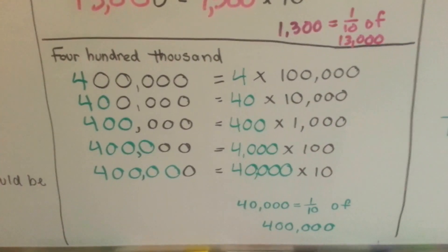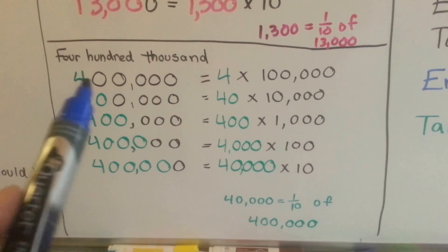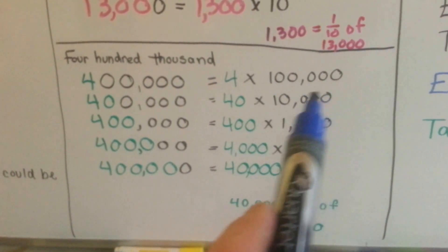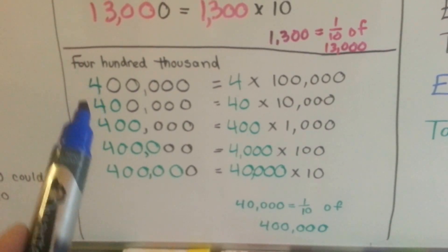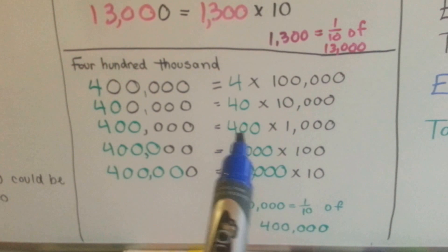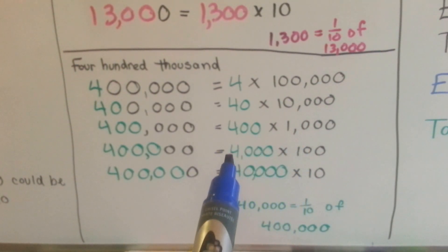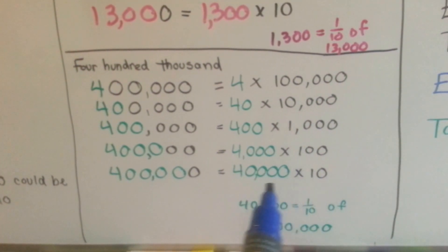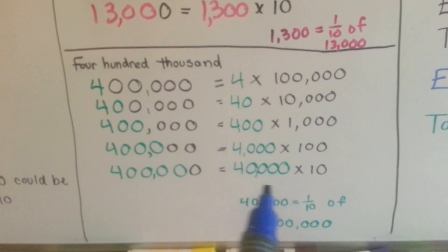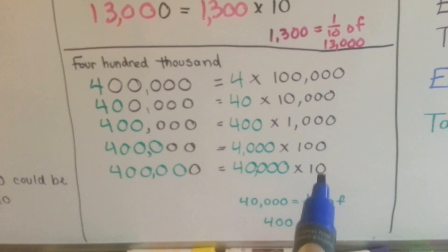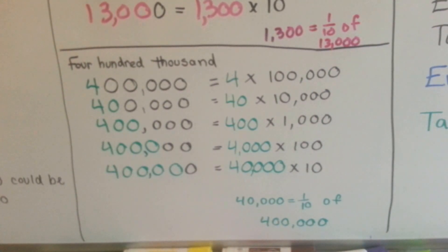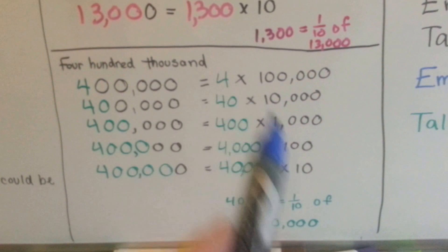Let's try this big one: four hundred thousand. Four hundred thousand is the same thing as four times one hundred thousand. Or we could say forty ten-thousands, or four hundred one-thousands, or four thousand one-hundreds, or forty thousand tens. That tells us that forty thousand is one tenth of four hundred thousand. All of these equal four hundred thousand.